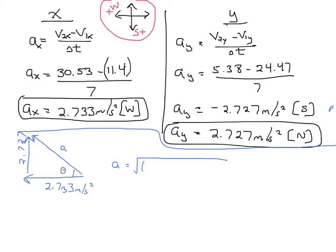When I solve for that acceleration, it's just using Pythagoras, same as we've done before when adding vectors. It's going to be acceleration is 2.733 squared plus 2.727 squared, and we work that out and we get 3.86 meters per second squared. We also need to find that angle. Tan theta is 2.727 over 2.733, and if we work that out, we get 44.9 degrees.